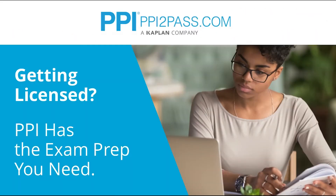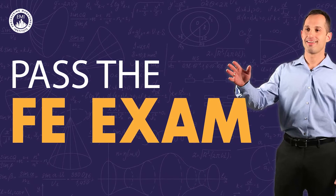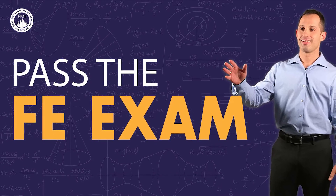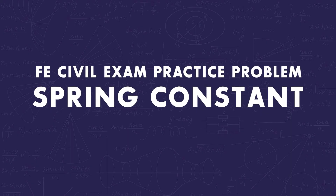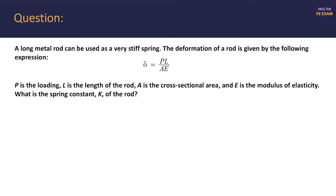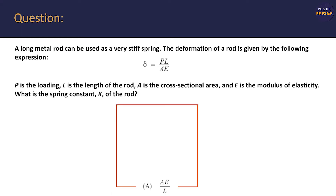Let's dive in. A long metal rod can be used as a very stiff spring. The deformation of a rod is given by the following expression. P is the loading, L is the length of the rod, A is the cross-sectional area, and E is the modulus of elasticity. What is the spring constant K of the rod? And of course, they give you four possible answers.